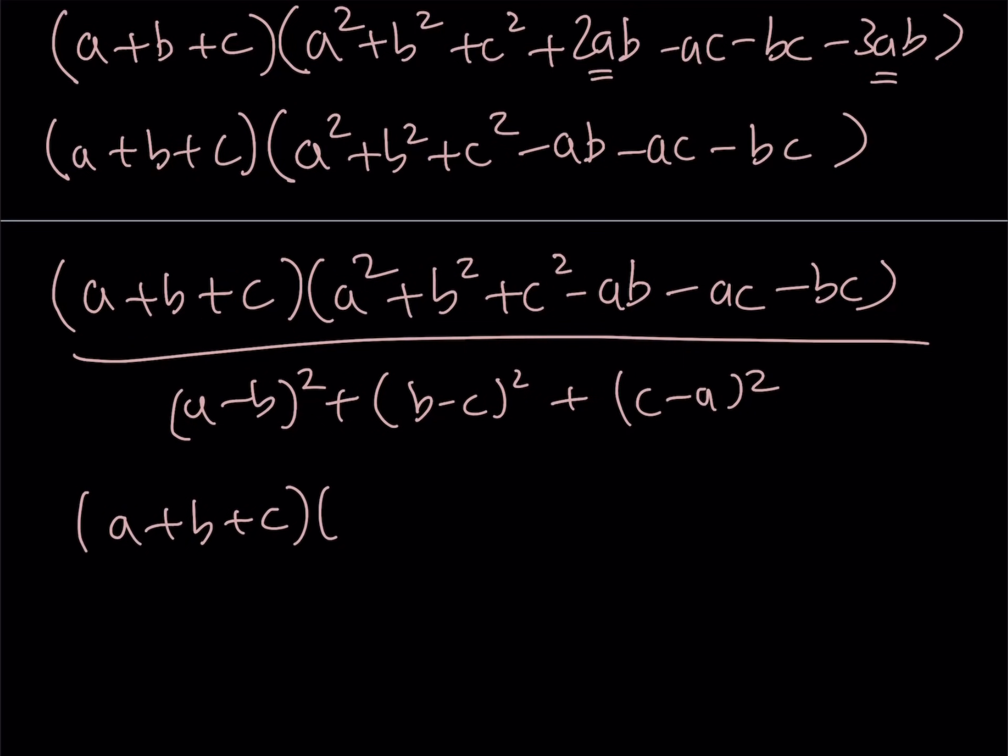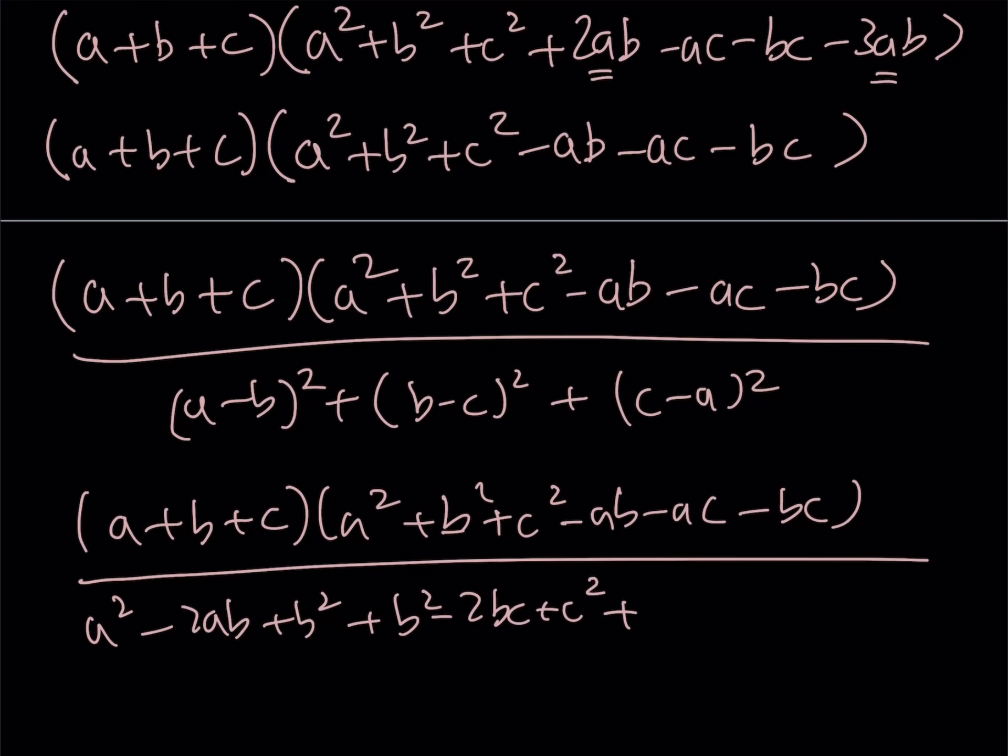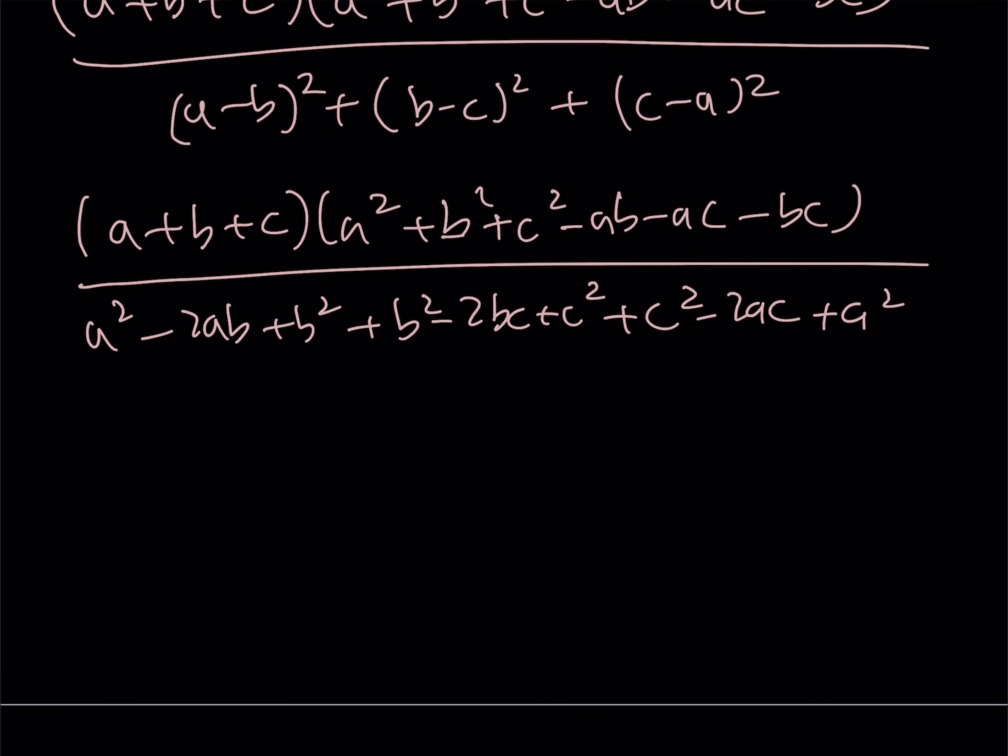a plus b plus c multiplied by a squared plus b squared plus c squared minus ab minus ac minus bc divided by. Now, if you expand this, you're going to get a squared minus 2ab plus b squared plus b squared minus 2bc plus c squared plus c squared minus 2ac plus a squared. And what happens after this is you can just add like terms, and the result is going to be pretty interesting.